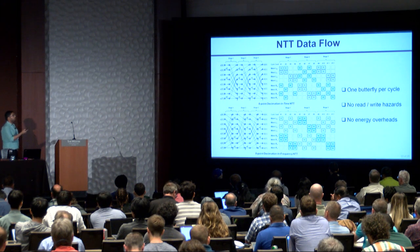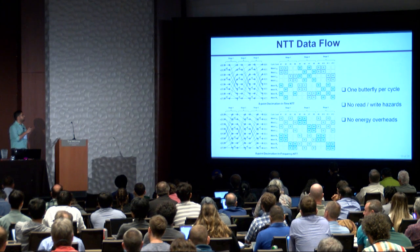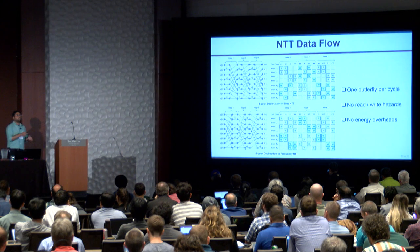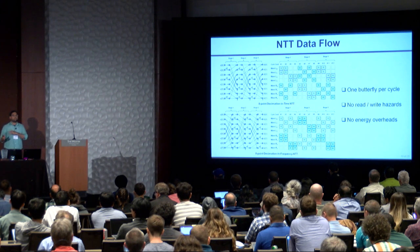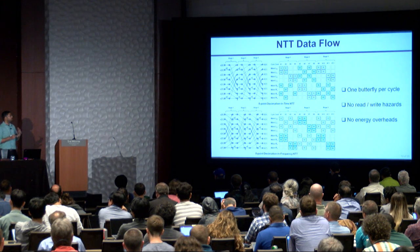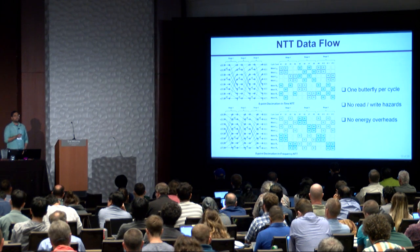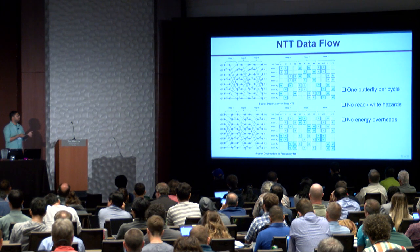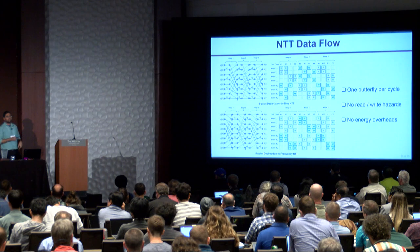To demonstrate how our NTT data flow works, we show a toy example with an eight-point NTT, both for decimation in time and decimation in frequency. In each stage, the two inputs of the butterfly come from two different single-port RAMs and the outputs are written to two other single-port RAMs. We still have one butterfly per cycle and maintain throughput. We also save some energy because reading from a dual-port ten-transistor SRAM bit cell involves more energy than reading or writing to a single-port six-transistor bit cell.